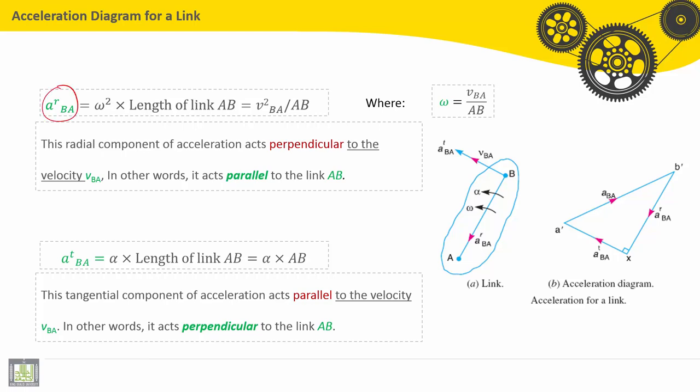A^R_BA is equal to omega squared multiplied by the length of link AB. So, we know omega is equal to V_BA divided by AB. Finally, the radial component A^R_BA will be equal to V_BA squared divided by AB.